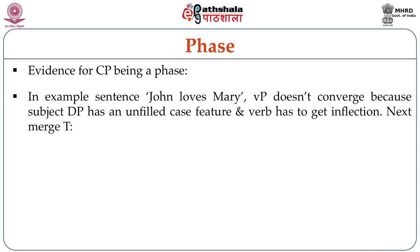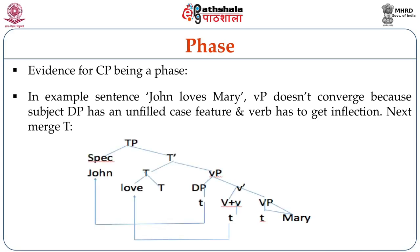In the example sentence John loves Mary, little vP doesn't converge yet because the subject DP has an unfilled case feature and the verb has to get inflection. So we next merge T head to the little vP, and we get the structure on screen. In this structure, you can see that big V had already adjoined to little v, and this complex moves further up and adjoins to T, giving us love plus T.